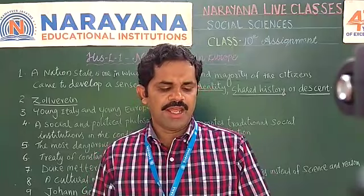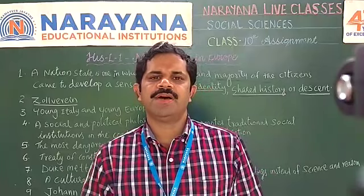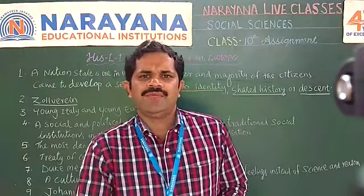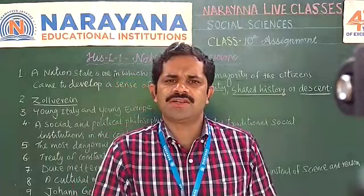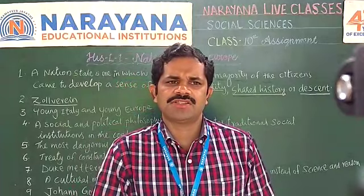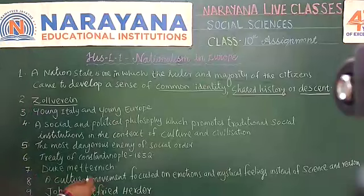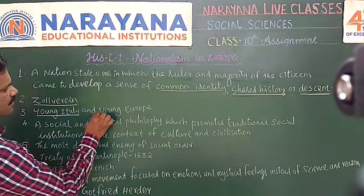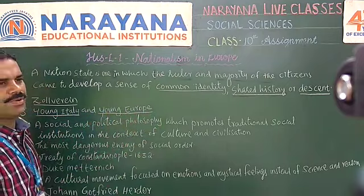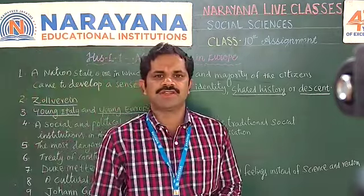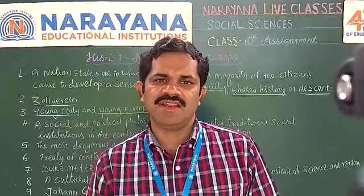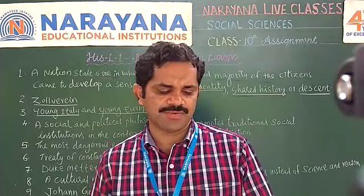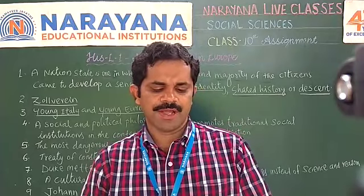Question No. 3: Name the secret societies founded by Giuseppe Mazzini. Mazzini was an Italian revolutionary who founded two secret societies. The first one was called Young Italy and the second one was called Young Europe. These were the two secret societies founded by Giuseppe Mazzini.